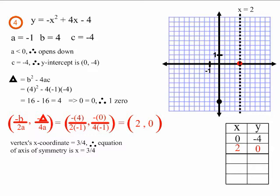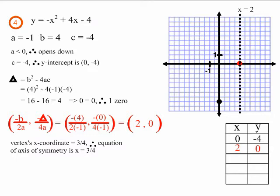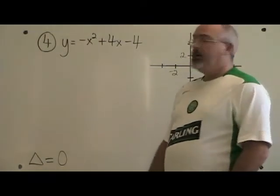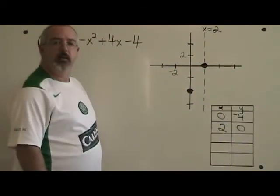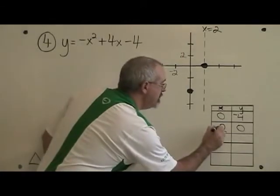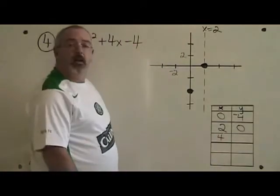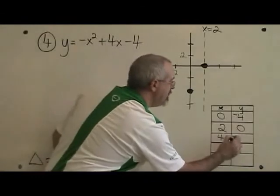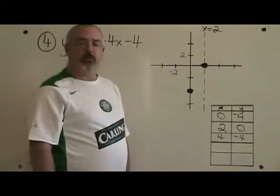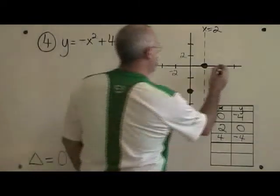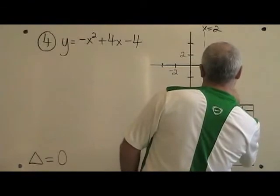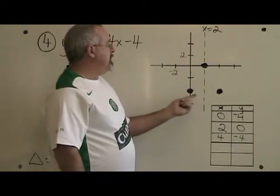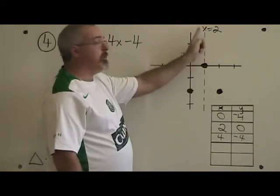This is what example four looks like before we find our mirror point. To find the mirror point for example four, I need to know that the mirror point's x-coordinate will be double the x-coordinate of the vertex — double 2 is 4. And the y-coordinate of the mirror point will be the same as the y-coordinate of the y-intercept, negative 4. So my mirror point is (4, negative 4). Let's put it on the graph. You can see that this point makes a mirror image to the y-intercept across the mirror created by the axis of symmetry.